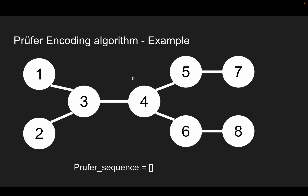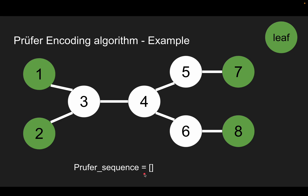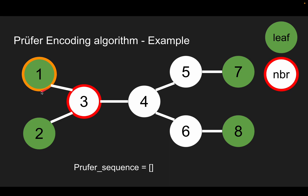Let's take an example. Here is a given tree. Initially, the Prüfer sequence is empty. We highlight leaf nodes in green, then start the encoding algorithm. We find the leaf node with the smallest label — here it is 1. Then we find the neighbor of this node, which is 3. Then we add the neighbor's label into the Prüfer sequence.